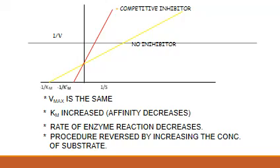The red line shows what happens in the case of a competitive inhibitor, and the yellow line shows what happens when there is no inhibitor. We find that the Vmax is not changed, but what is changing is the KM. In the presence of a competitive inhibitor, the KM is increased because the affinity of the enzyme for the substrate decreases. The rate of the enzyme reaction will decrease, but since it is a reversible process, this can be reversed by increasing the concentration of the substrate.